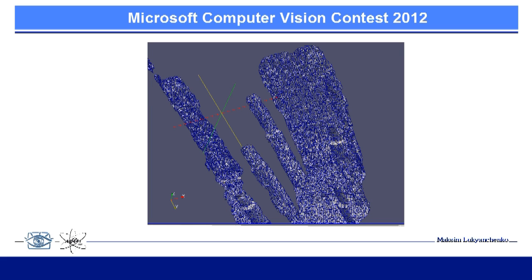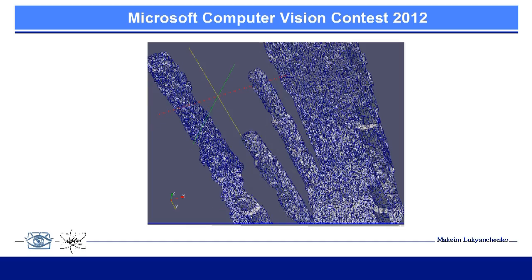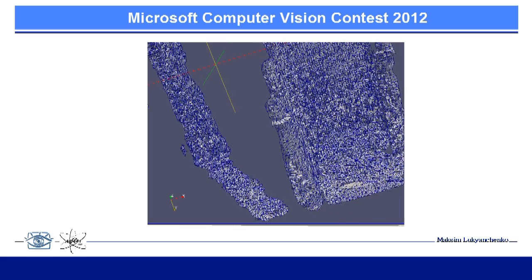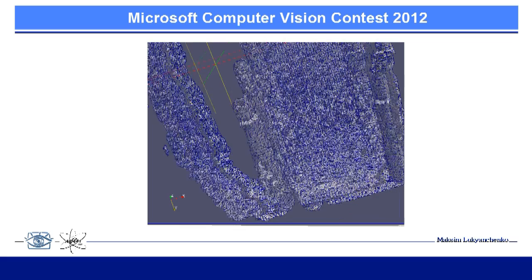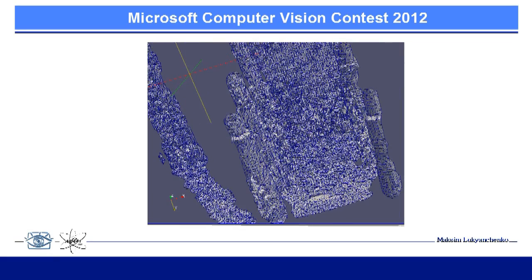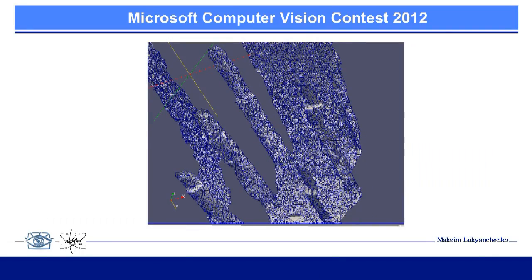Now you can see the results of the program — the reconstructed 3D surface of process tubes of the RBMK-1000 nuclear reactor. You can see that the difference between the diameters of the pipes is clearly visible, which suggests the possibility of technical realization of the proposed idea for 3D reconstruction of process tubes.